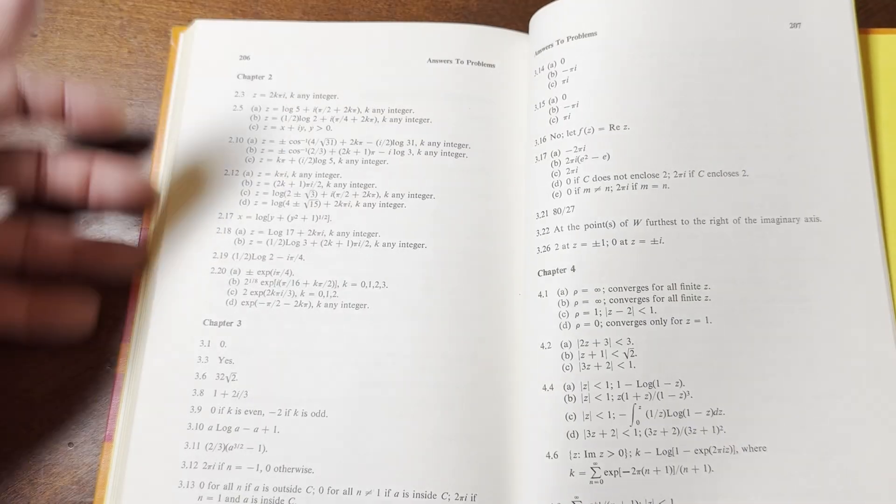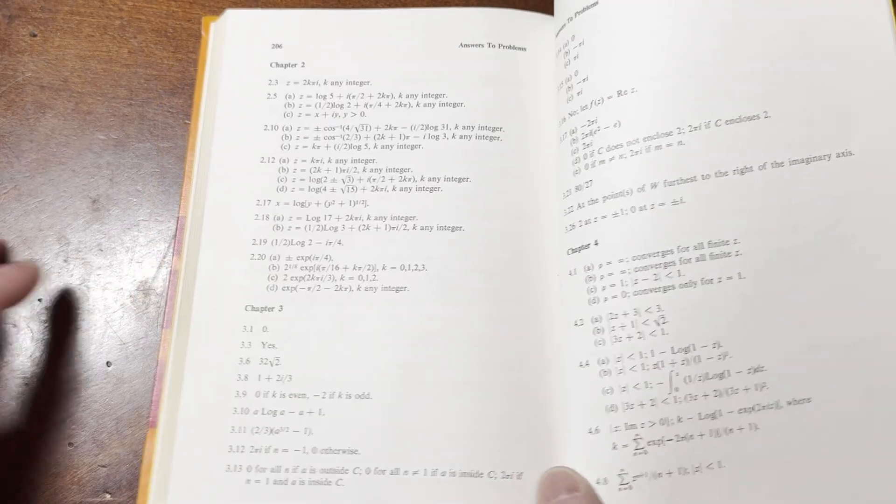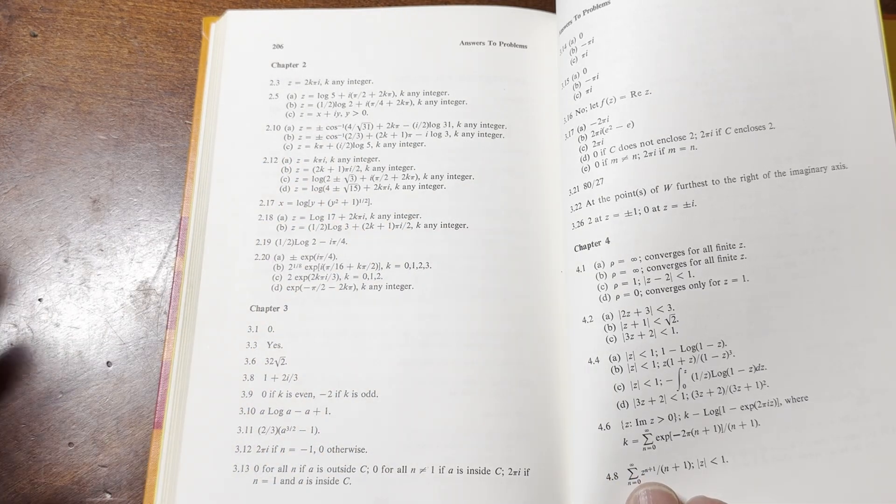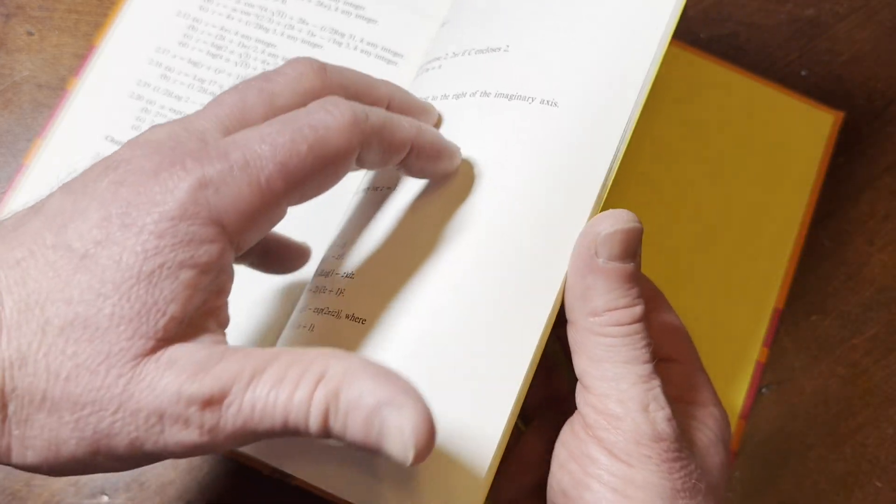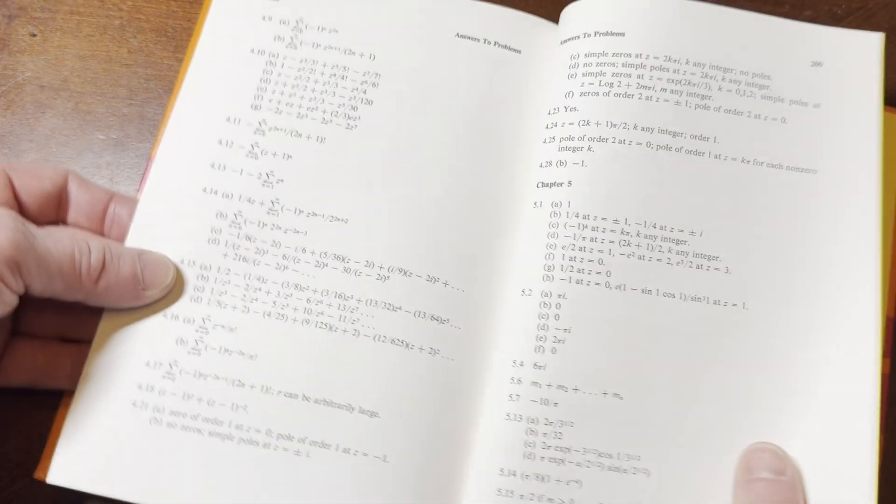Because a lot of books from this era on this topic have no answers. For example, the Ahlfors book, Complex Analysis by Ahlfors, his book does not have any answers. That's a very different book from this one, though. You know, they do share some topics, but they are different books.